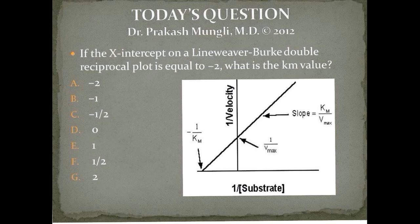The question that is given here is to find out the x-intercept using minus 2, basically to find out the Km value that is in the x-intercept.